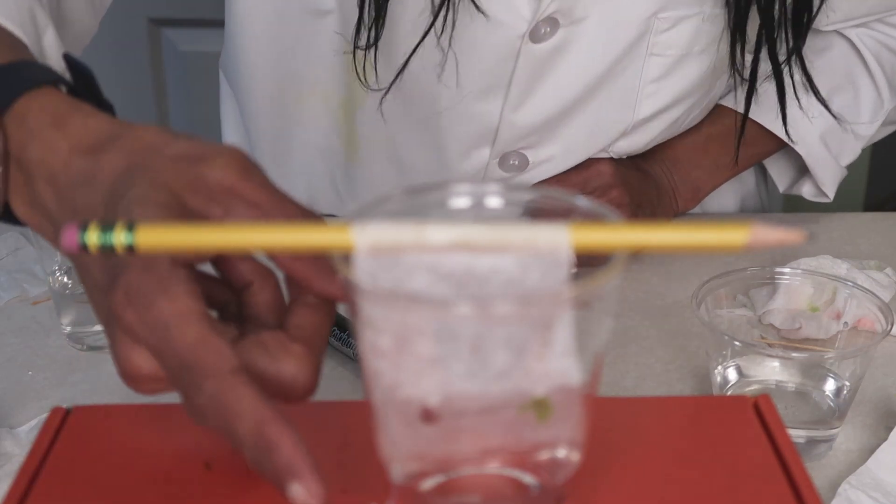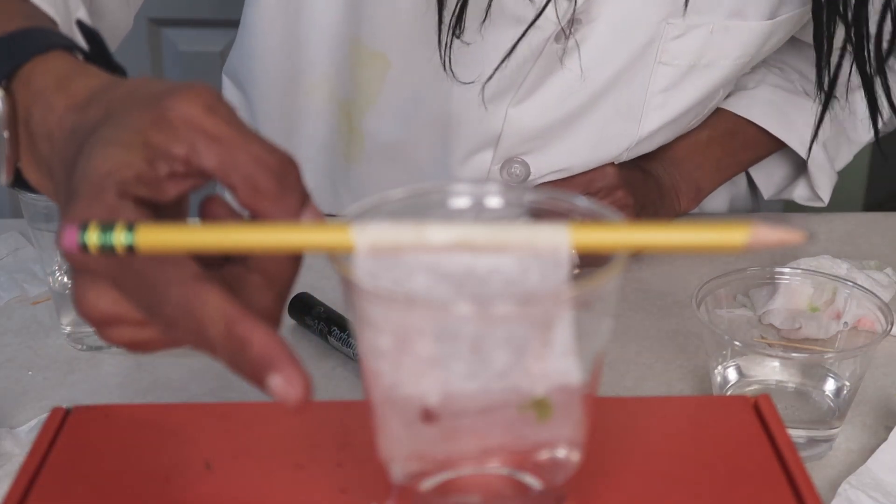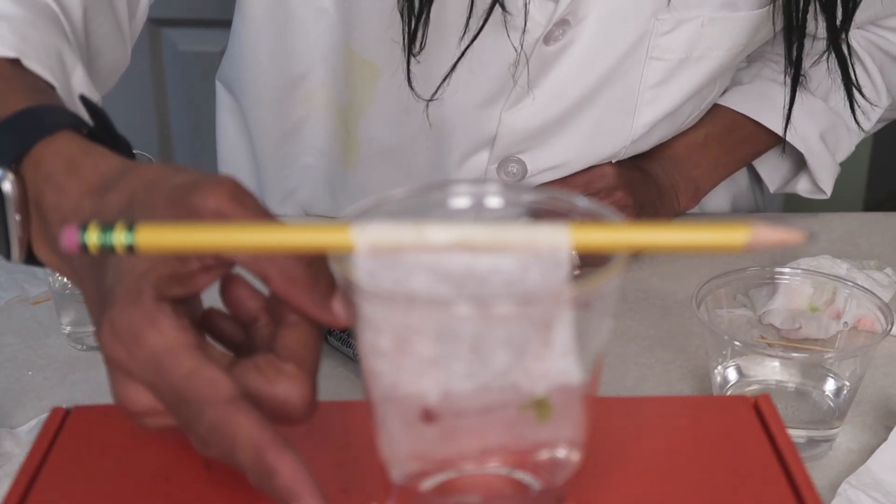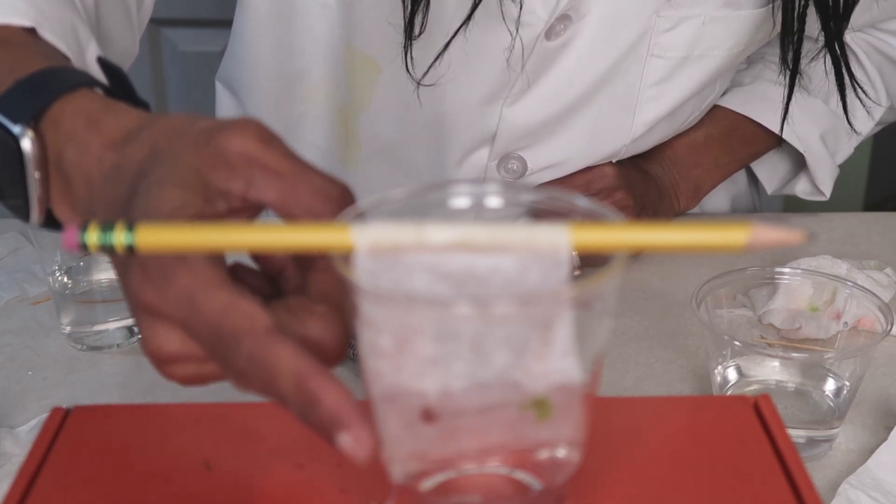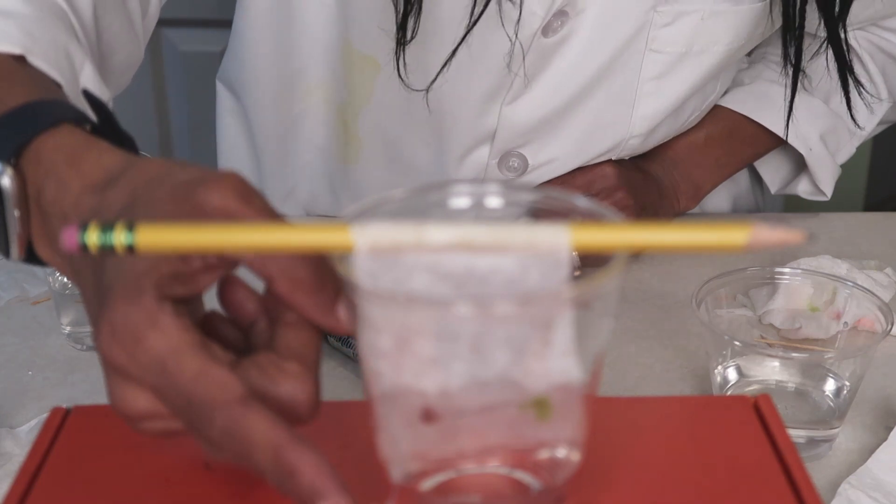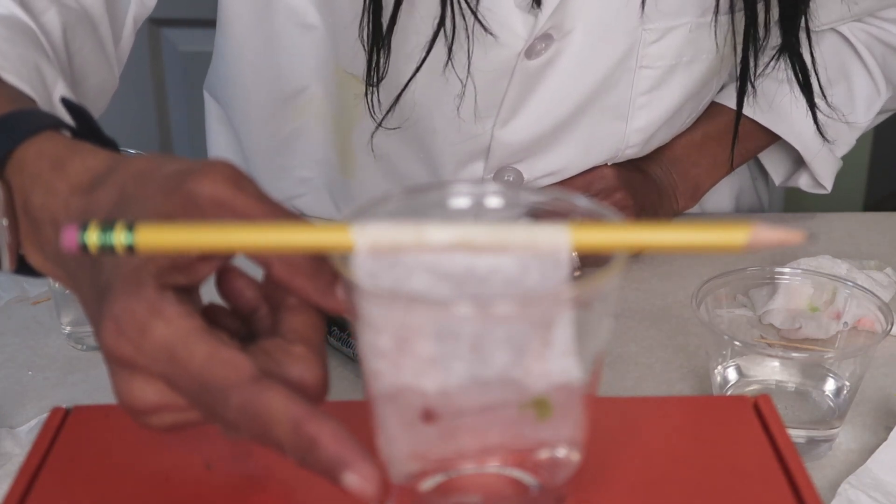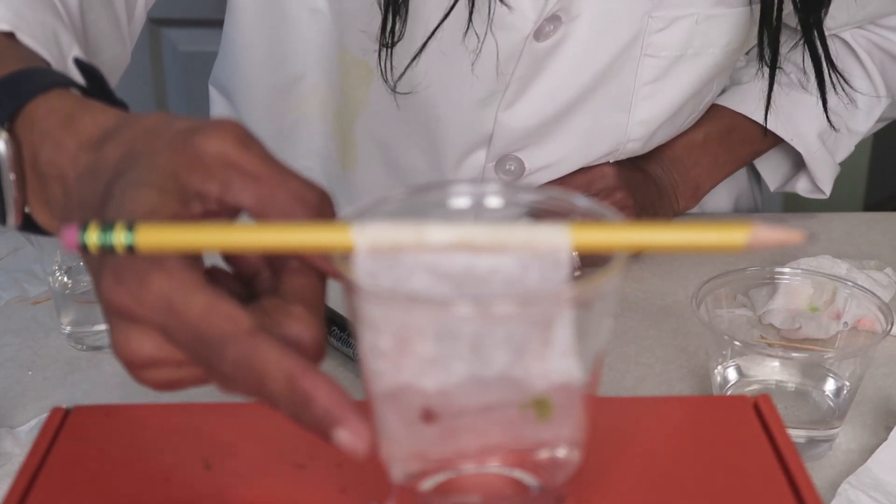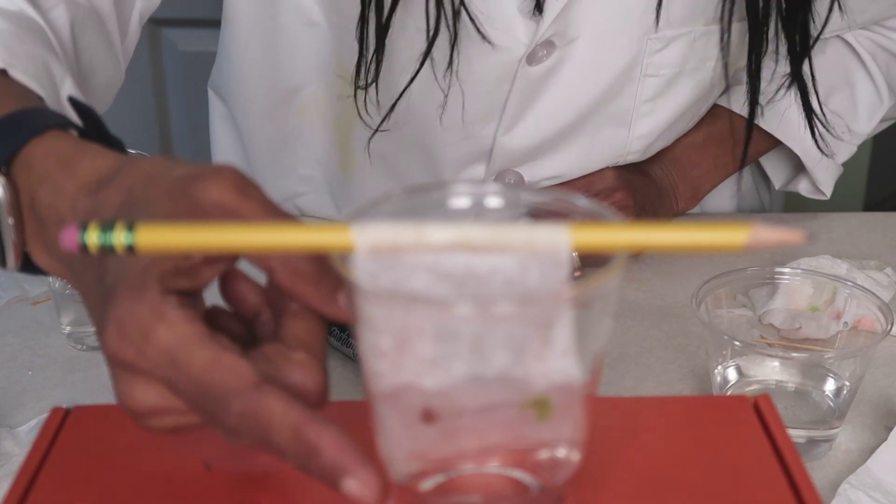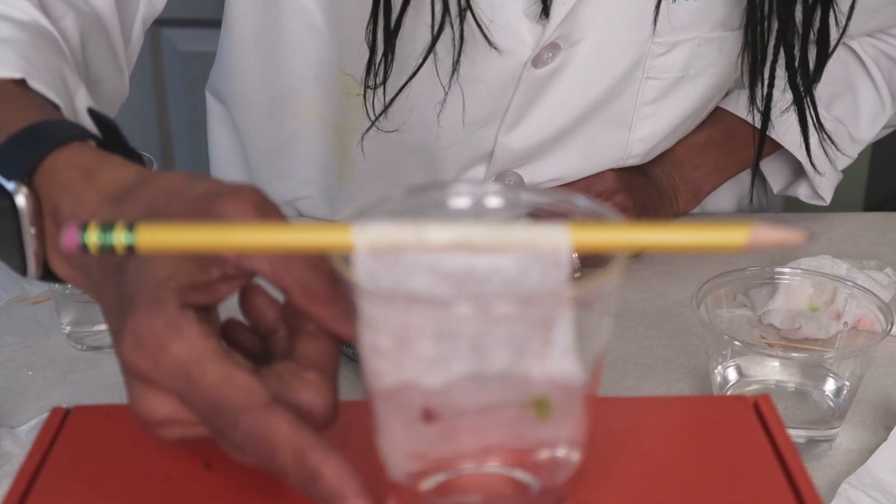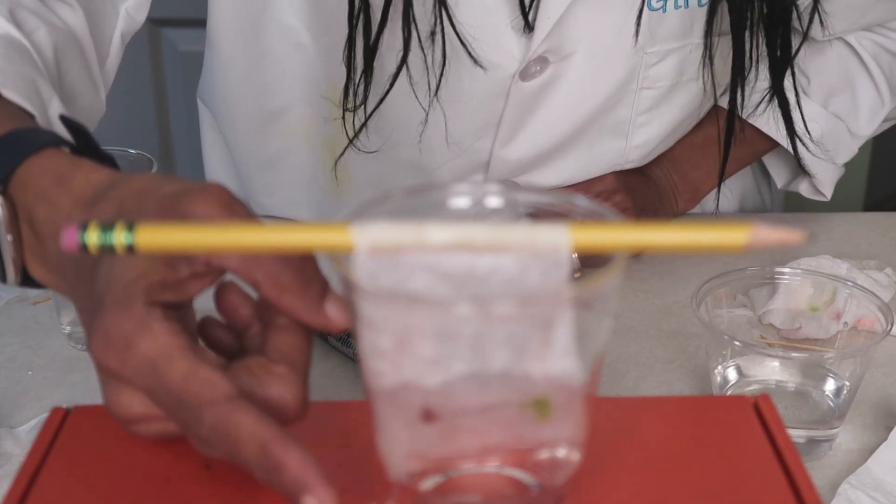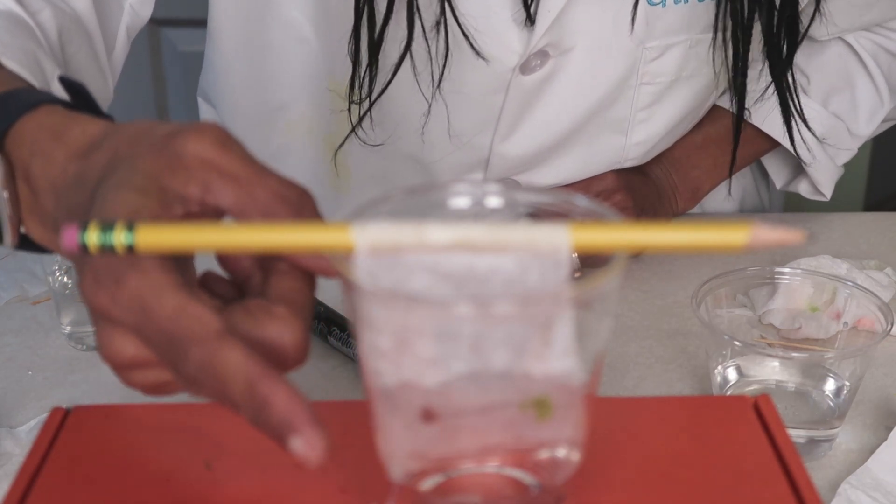Now when you see the water moving up the coffee filter, this is called a capillary reaction, meaning that it is moving up along the way. And as the water is moving, it's separating the colors into pigments and we can see what colors are in the green and in the purple as they separate.